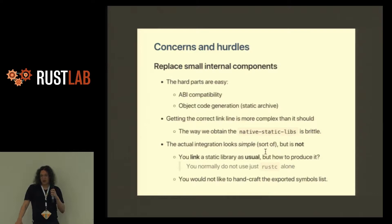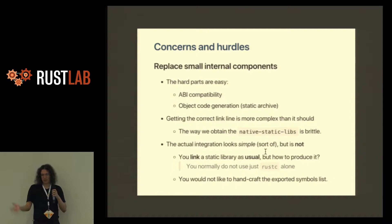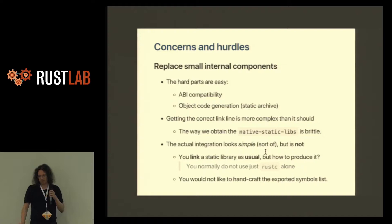The hard part — the part that usually makes you cry blood in other languages — is easy here. You don't see the problems. ABI compatibility is done, you don't have problems. Object code generation in a static archive: you get the .a, you don't have to think about that, you don't have to edit the binary or convert bytecode. It just works. Getting the static library that you have to link into the system — that's how static libraries work — you have a solution, it's feasible, it's usable, it's brittle. This part has to be fixed.